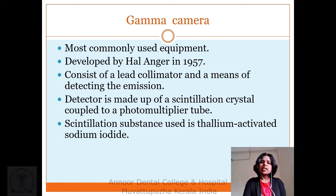The gamma camera is the most commonly used equipment, developed by Hal Anger in 1957. It consists of a lead collimator and a means of detecting emission. The detector is made up of a scintillation crystal coupled to a photomultiplier tube. The scintillation substance used is gallium-activated sodium iodide.